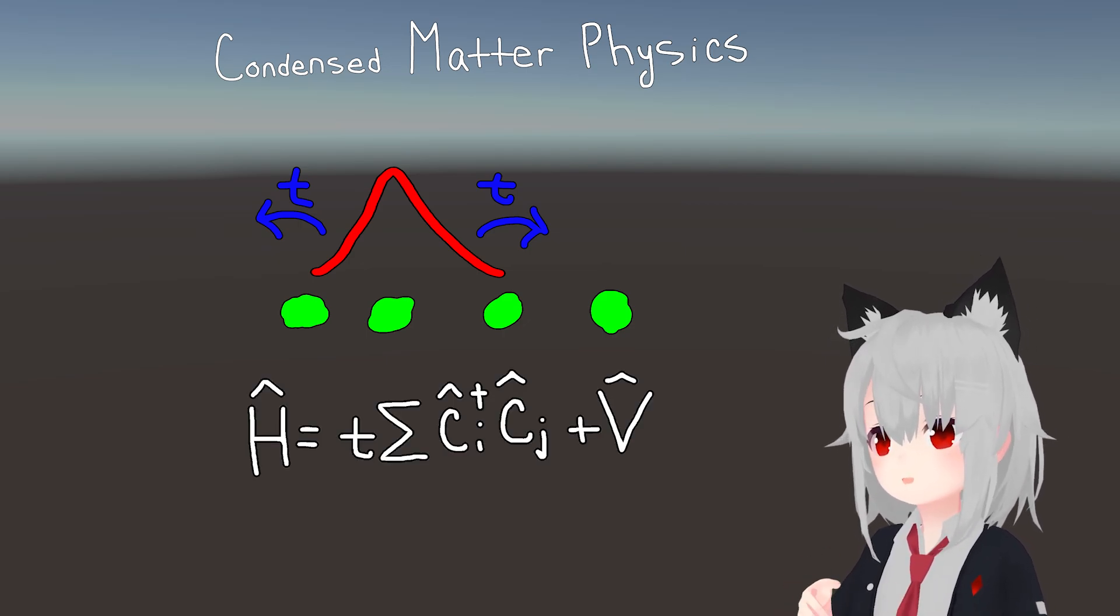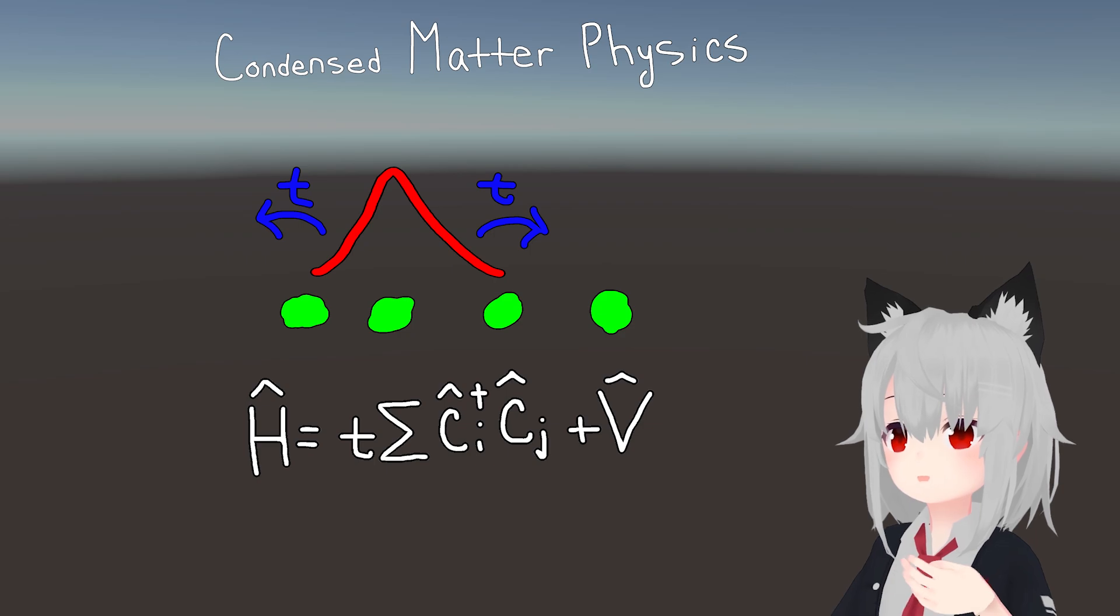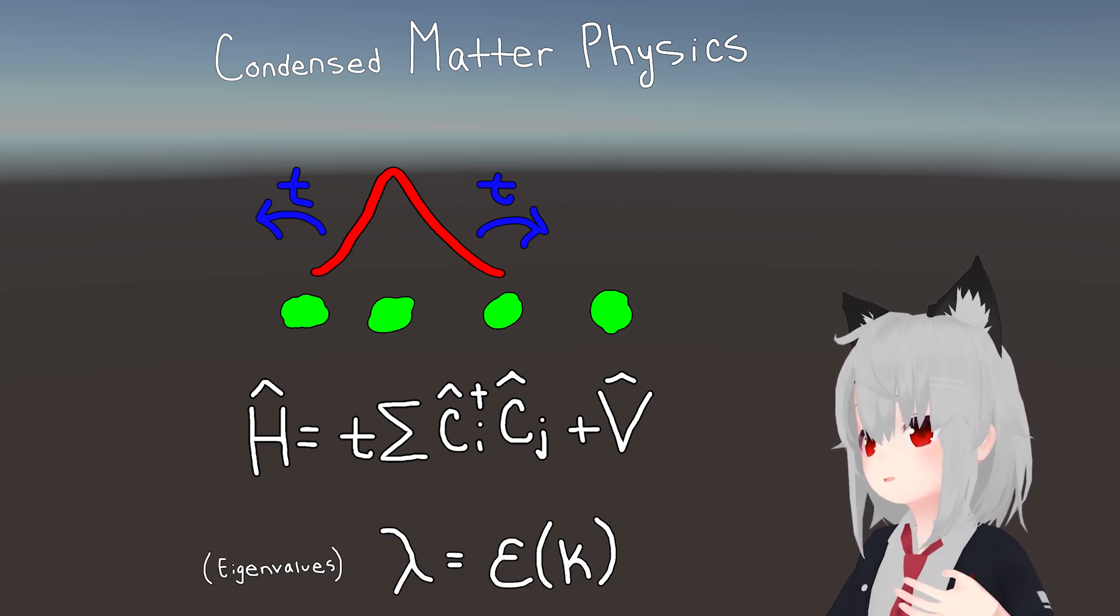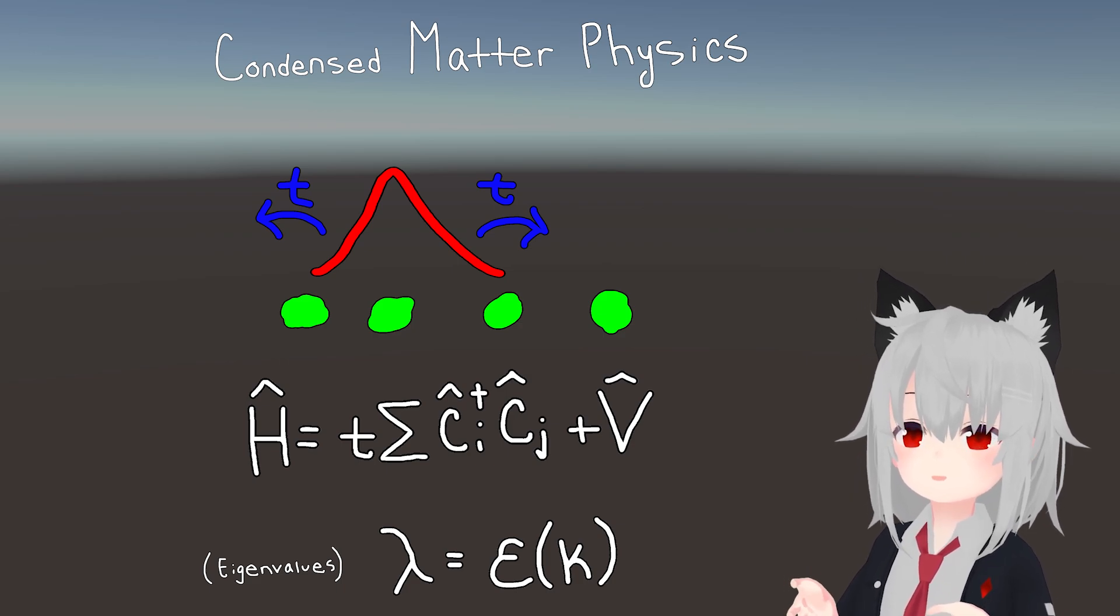Now, you can write down the equations of motion for this system in a second quantized Hamiltonian formalism, and if you diagonalize this Hamiltonian, then you'll get an equation which tells you what the allowed energies of these valence electrons are, as a function of, say, momentum.